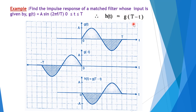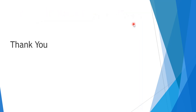We need to remember the expressions: what is the maximum signal to noise ratio, and what is the output of a match filter. If we remember these, it is very easy to find the outputs. Thank you.